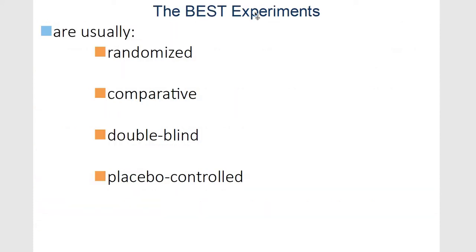The best experiments: if you're trying to make the best one, you're going to randomize it, make it comparative, have lots of different levels, make it double blind, and placebo controlled. That's your best option for an experiment.